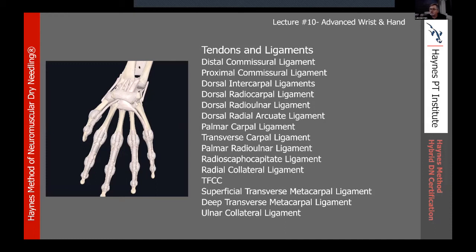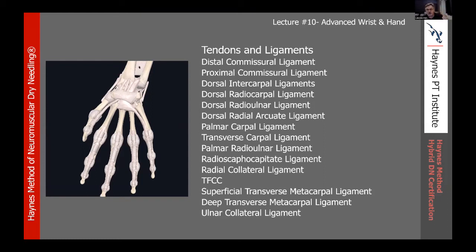If you thought the intrinsic muscles of the hand were specific, the tendons and ligaments get even more so. This is the most technically precise thing we'll do in dry needling — it really comes down to your ability to palpate, find your bony landmarks, do your resistive muscle testing, and identify the right muscles and landmarks. There are lots of ligaments in and around the wrist — we'll find a similar situation when we get to the foot and the ankle. Rarely do we need to needle all of these, but every now and then we do find an issue that we need to treat. I've made a very comprehensive approach to the different ligaments of the wrist and hand.